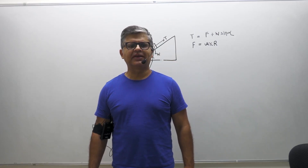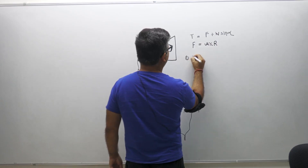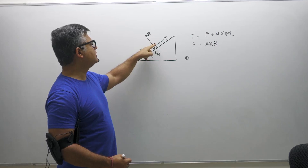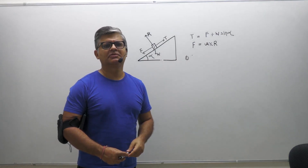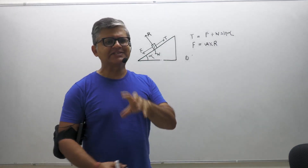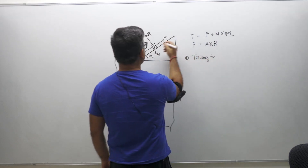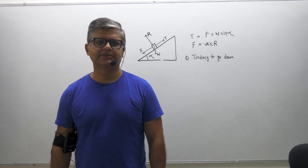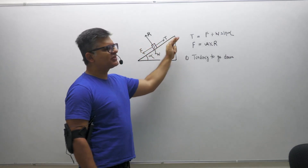Now, situation number one: the body wants to slip down. It has a tendency to slip down — it is still stationary but has a tendency to go down. If the body has a tendency to go down, what happens to the direction of friction?